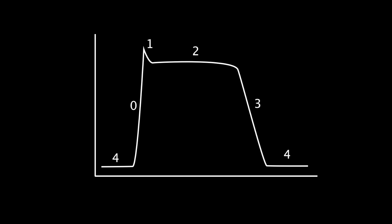Class 3 antiarrhythmics are also known as potassium channel blockers. They work on phase 3, which is rapid repolarization. Let's see how.